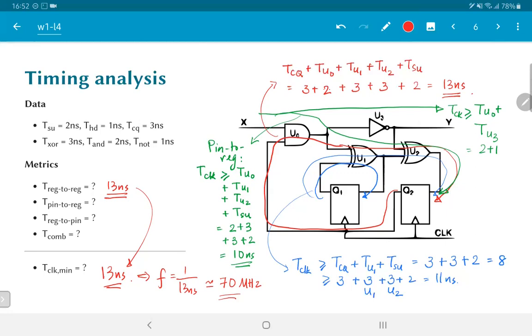We need to essentially do the timing analysis for all possible combinations through the circuit and find out what is the longest such critical path. This red path over here that we have is essentially what would be called the critical path, which is the longest combinational path between pairs of registers in the circuit. That determines the maximum frequency or the minimum clock period that can be used on this circuit.